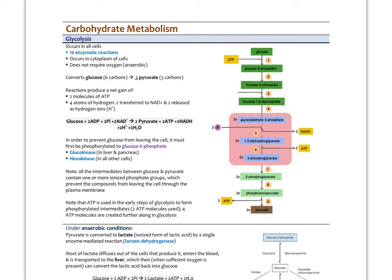Glycolysis occurs in all cells, not just liver cells. There are 10 enzymatic steps that oxidize glucose into pyruvate. This process does not require oxygen — it's anaerobic — and it occurs in the cytoplasm, not inside the mitochondria. We're converting glucose into two 3-carbon pyruvate molecules. The reactions create a net gain of two molecules of ATP and four hydrogen atoms with electrons transferred to NAD, giving us two NADH. The overall net reaction: glucose plus two ADP plus two inorganic phosphate groups plus two NAD+ becomes two pyruvate, two ATP, two NADH, two hydrogen ions, and two water molecules.